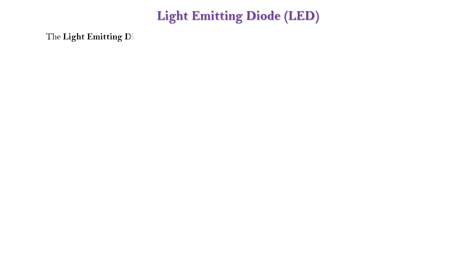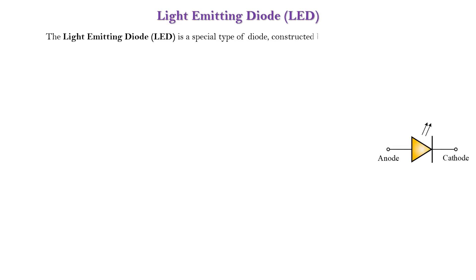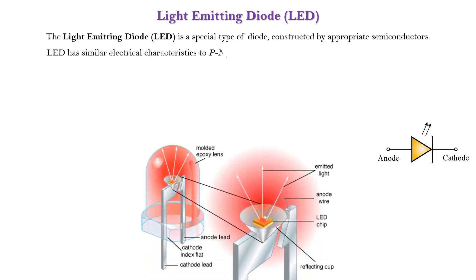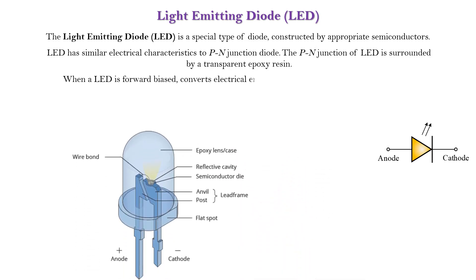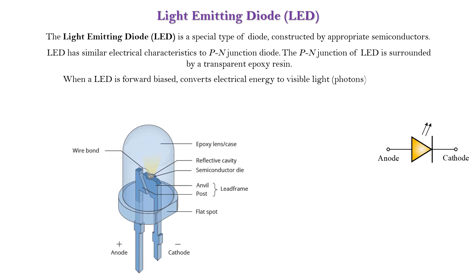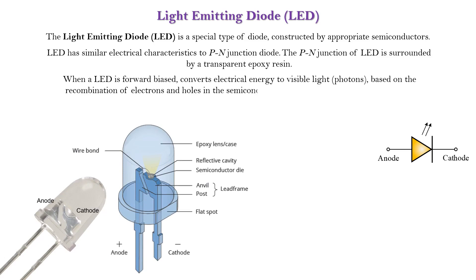The light-emitting diode is a special type of diode constructed by appropriate semiconductors. LED has similar electrical characteristics to a PN junction diode. The PN junction of LED is surrounded by a transparent epoxy resin. When a LED is forward biased, it converts electrical energy to visible light — photons — based on the recombination of electrons and holes in the semiconductor, a process called electroluminescence.